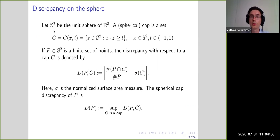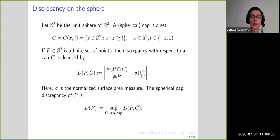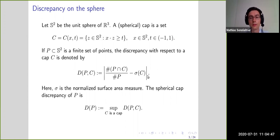We are working on the unit sphere of R³ and we consider the system of spherical caps — these are intersections of half-spaces with the sphere. If we are given a finite set of points, we consider the discrepancy with respect to a cap, defined as the fraction of points lying in the cap over the total number of points minus the normalized area of the cap. This is a measure of how far this fraction deviates from the expected value.